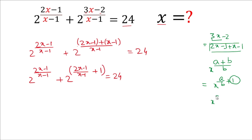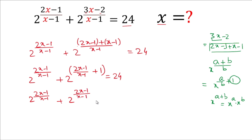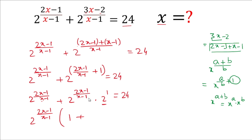Now using the rule x^(a+b) = x^a multiplied by x^b, we rewrite the second term as 2^((2x-1)/(x-1)) multiplied by 2^1, which is 2, equal to 24. From this expression we can take 2^((2x-1)/(x-1)) as a common factor from both terms, giving 2^((2x-1)/(x-1)) times (1 + 2) equals 24.